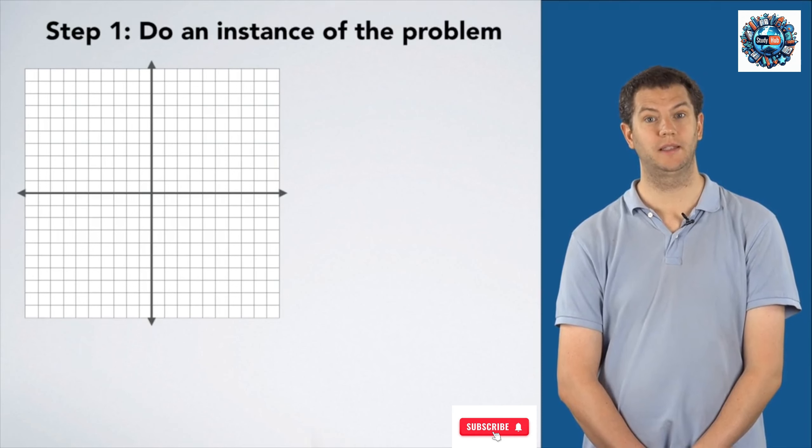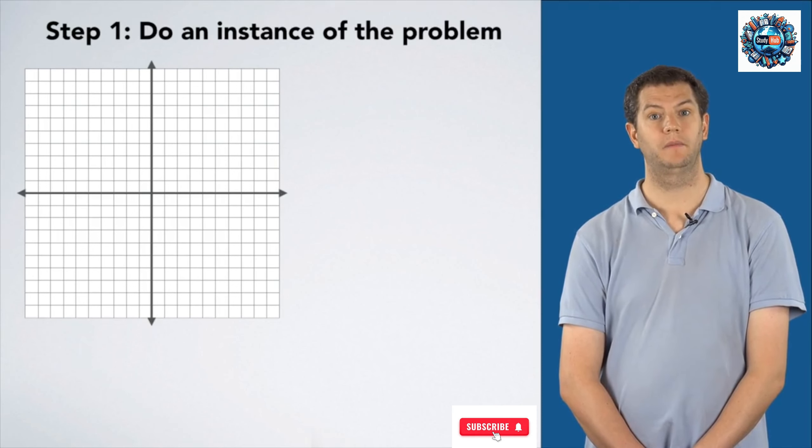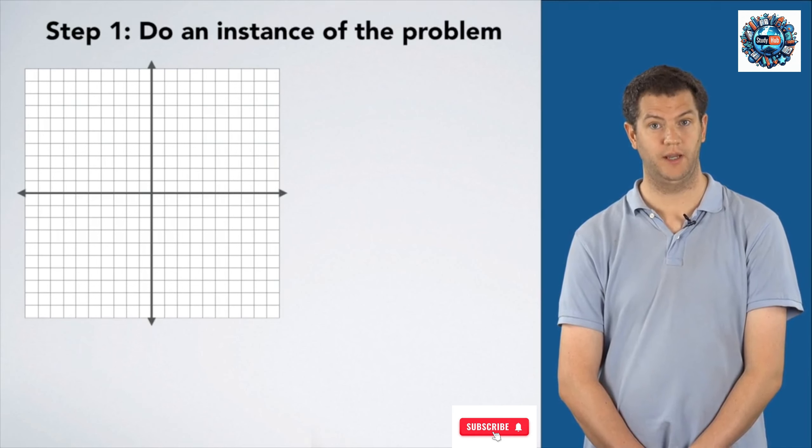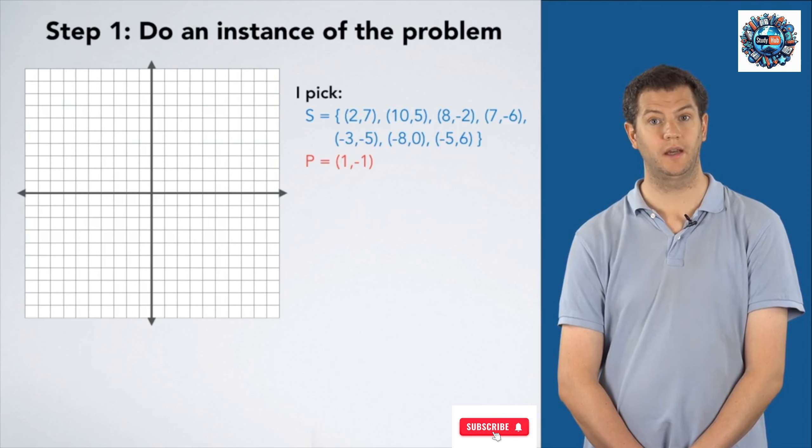We'll start by doing an instance of this problem by ourselves. To do that, I've begun by drawing a Cartesian coordinate grid and choosing a set s of points, which you can see here, and another point, p.